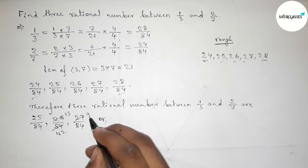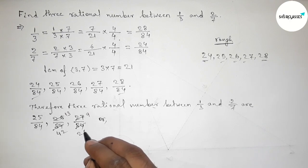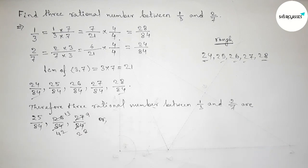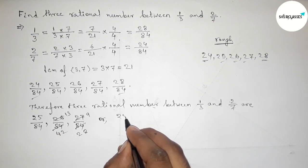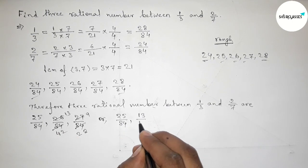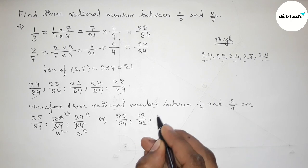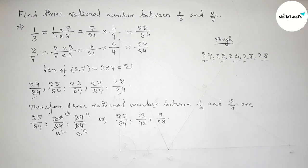We can also simplify these fractions. Dividing 27 by 84 by 3 gives 9 by 28. So the three rational numbers are 25 by 84, 26 by 84 which simplifies to 13 by 42, and 27 by 84 which simplifies to 9 by 28. That's all — thanks for watching, please share it.